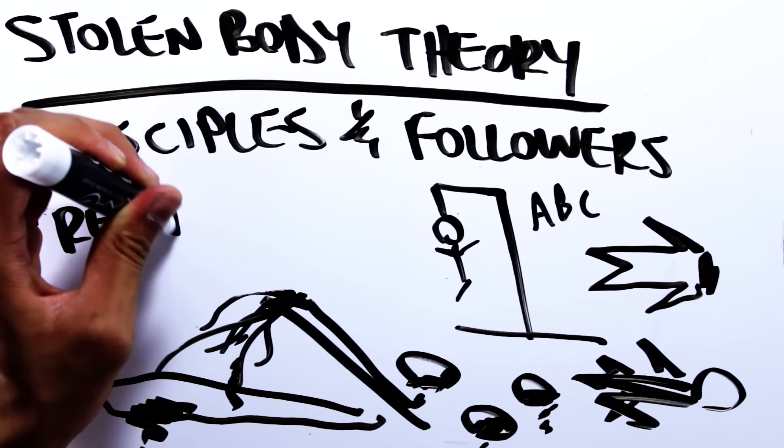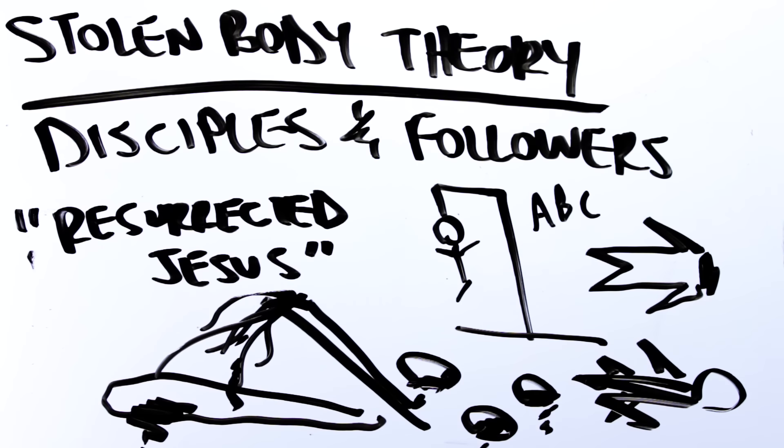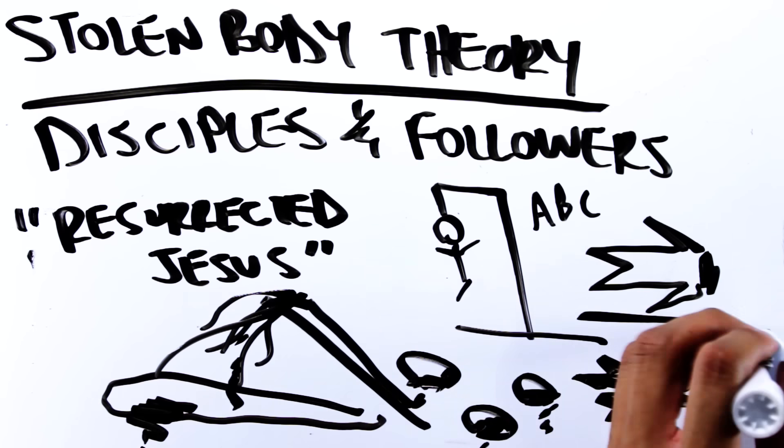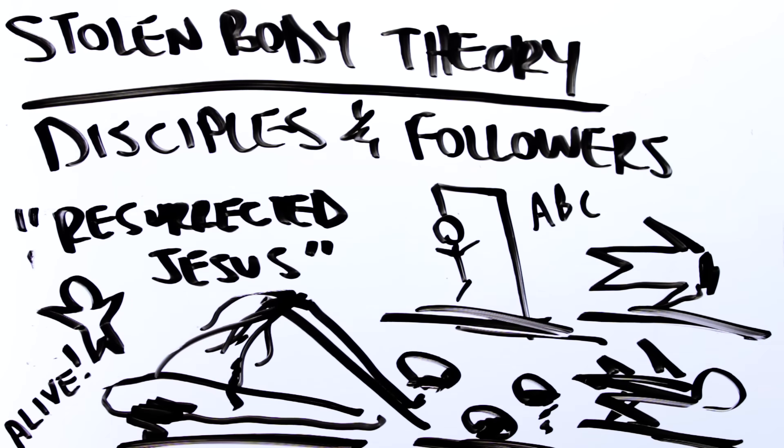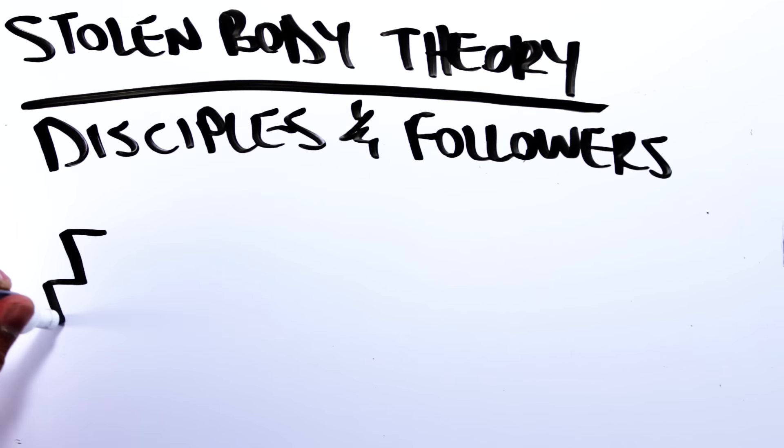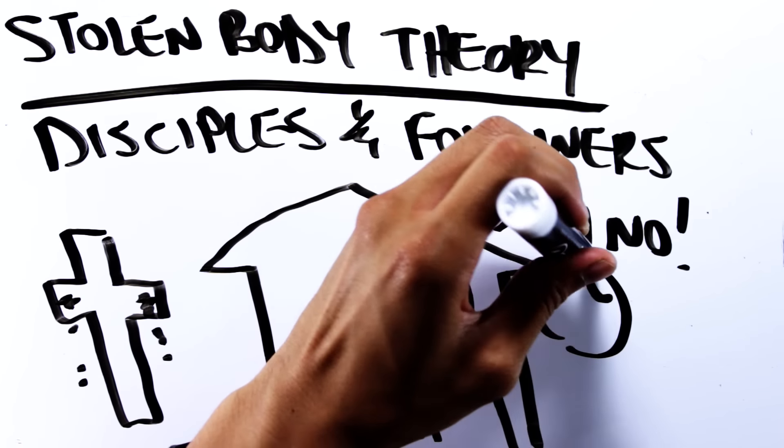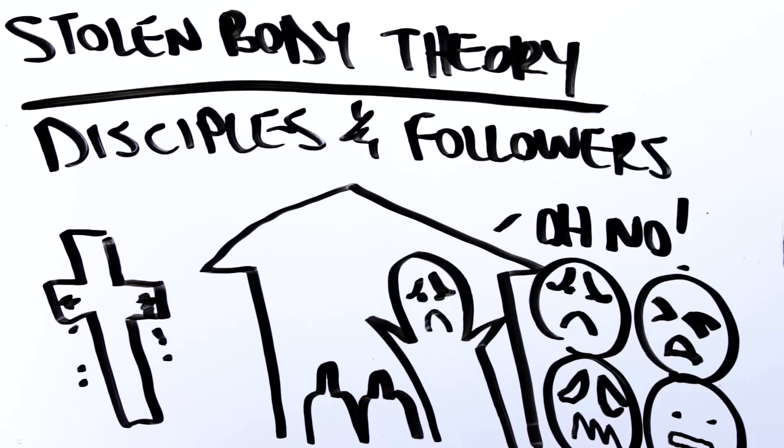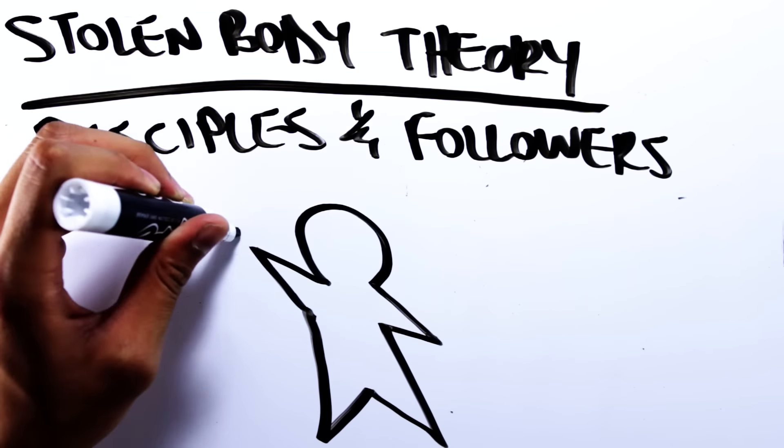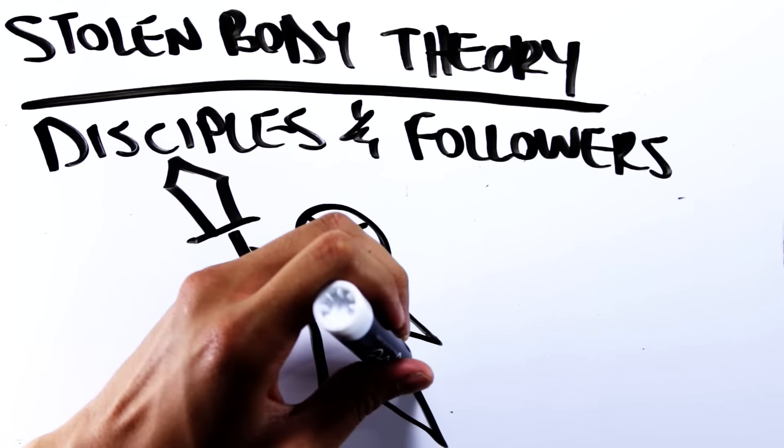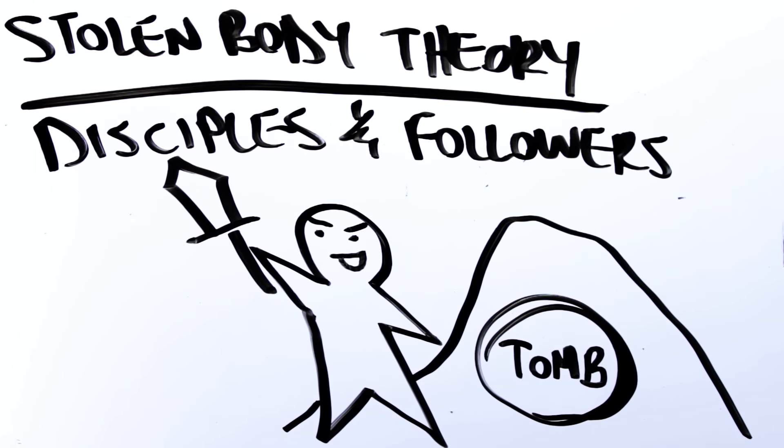So if these disciples all died for this resurrected Jesus, why would they all be willing to die for a lie? It would make more sense for them to save themselves. On top of that, after Jesus died, all the cowardly disciples were hiding because they were all freaked out about dying too. They were in no condition to fight the Roman soldiers that were guarding the body of Jesus. So since Jesus's body couldn't have been stolen, there has to be another explanation.